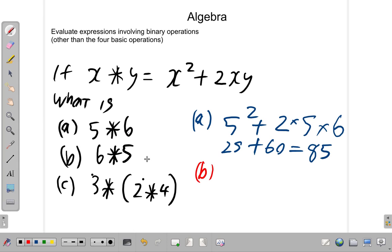Let's look at part B. 6 star, 6 asterisk 5. A was 5 asterisk 6. Now, it's 6 asterisk 5. 6 is first, in the same position as X. So, whatever you do with X over here, you're going to do with 6. So, it's 6 squared.